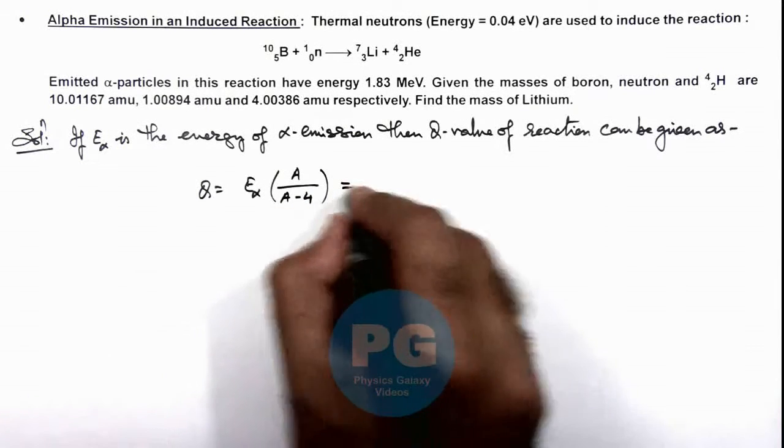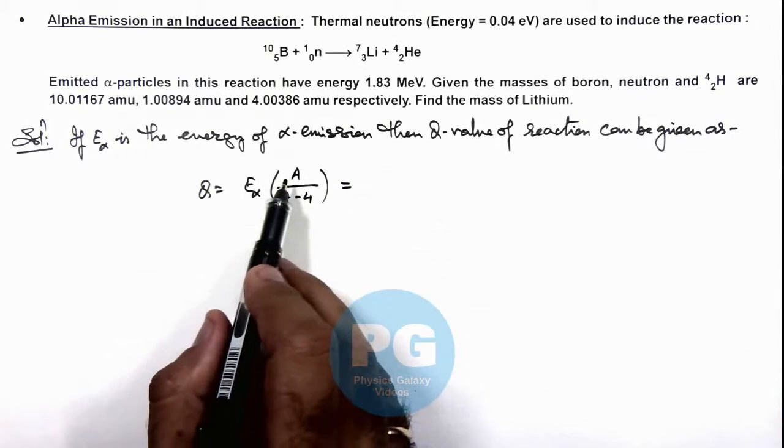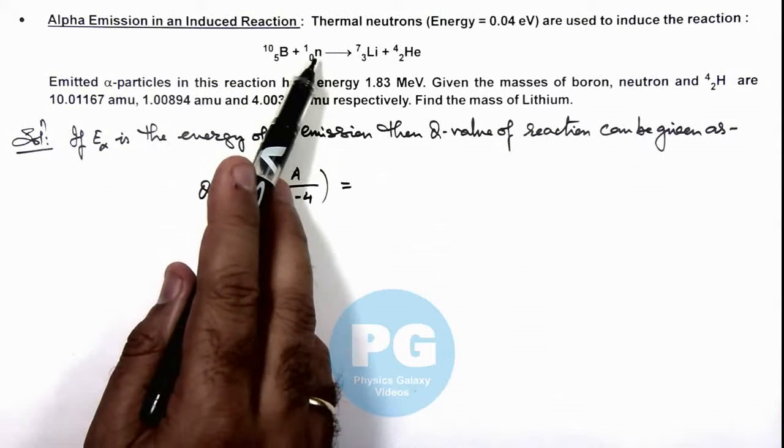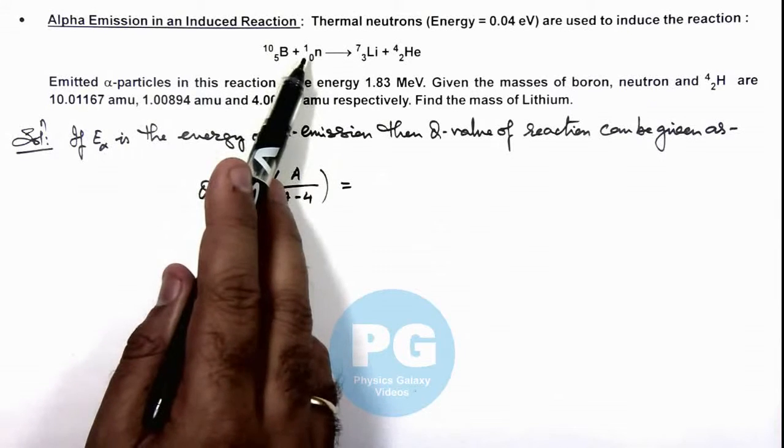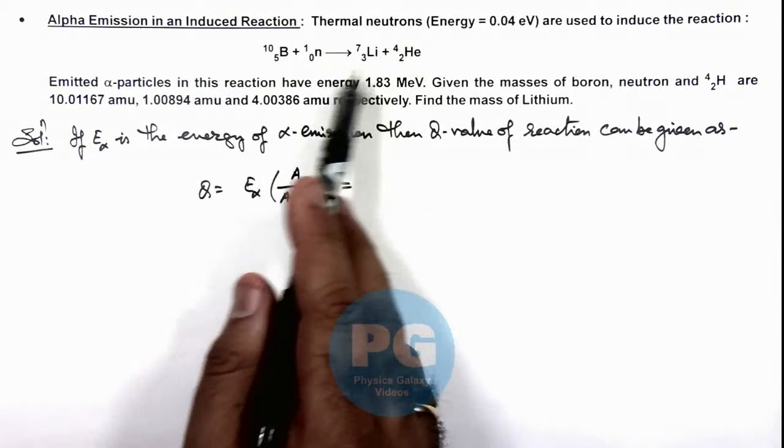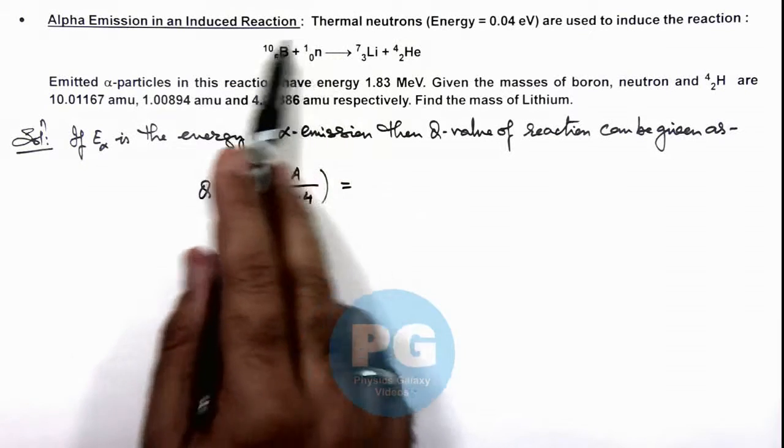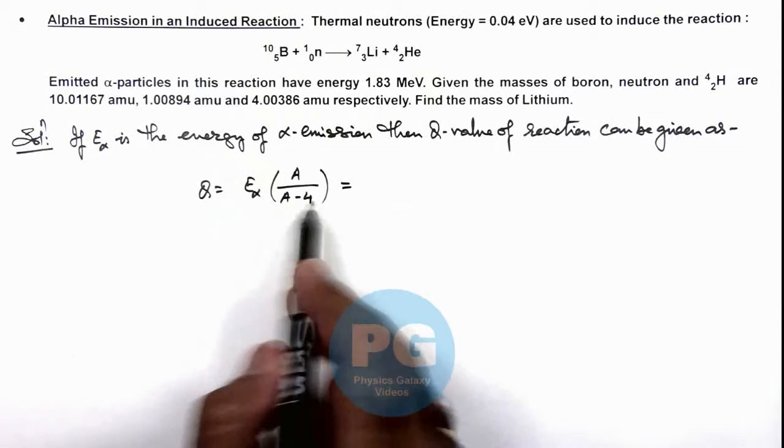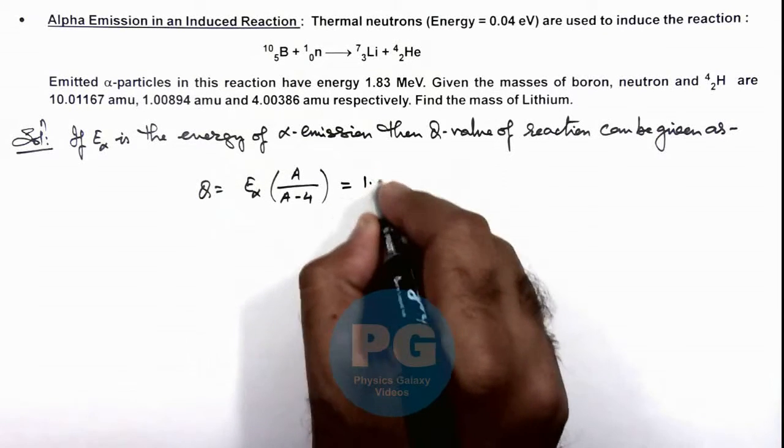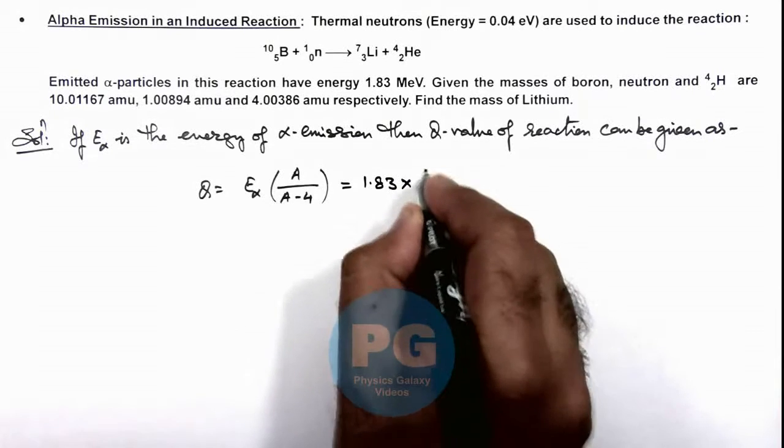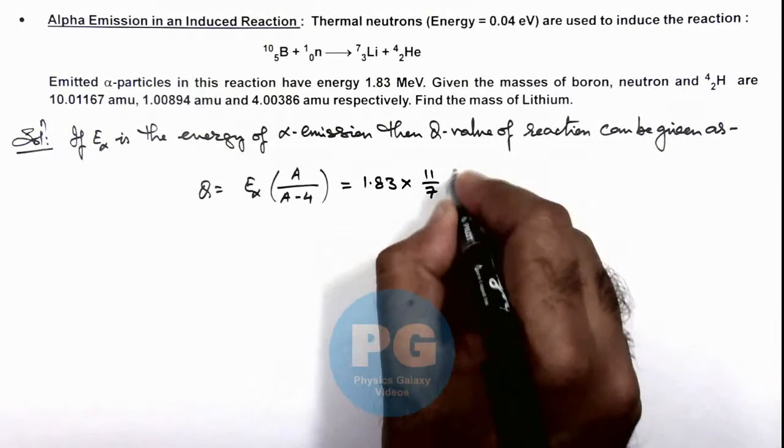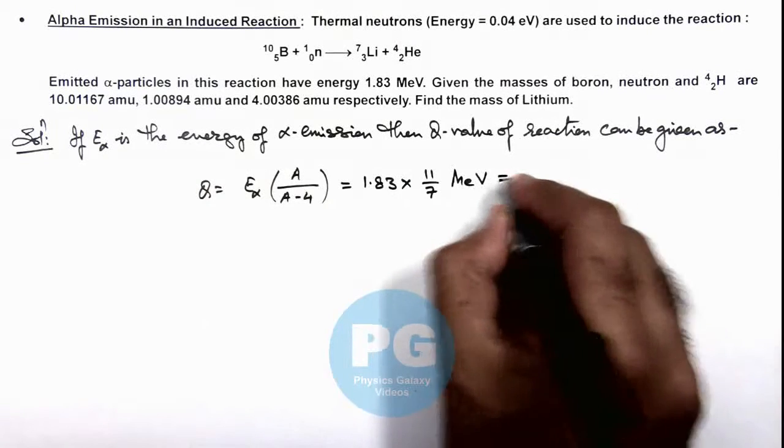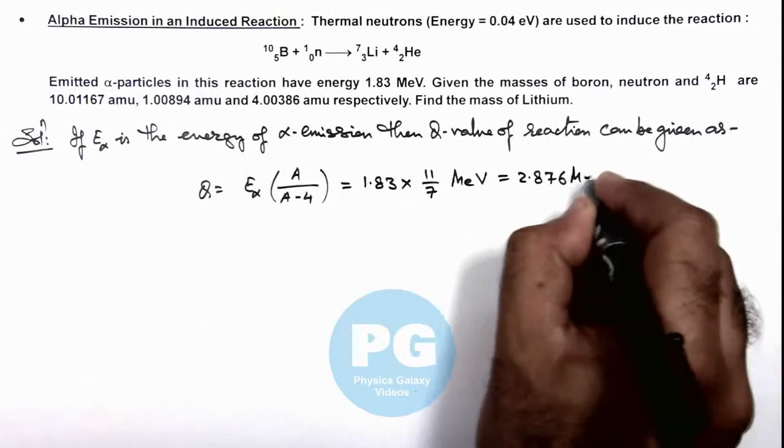So in this situation here, we'll consider A as initially boron and neutron are fusing together and then producing lithium and helium. So in this situation, the initial value of A will be taken as 11, and 11 minus 4 we can take as 7. So this will be 1.83 multiplied by 11/7 MeV. This is the total energy evolved in the reaction which is equal to 2.8766 MeV.